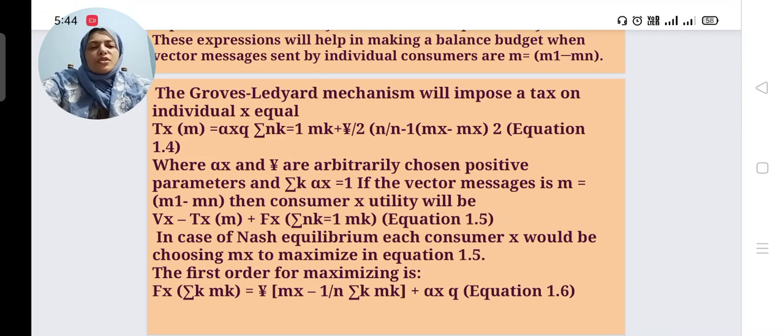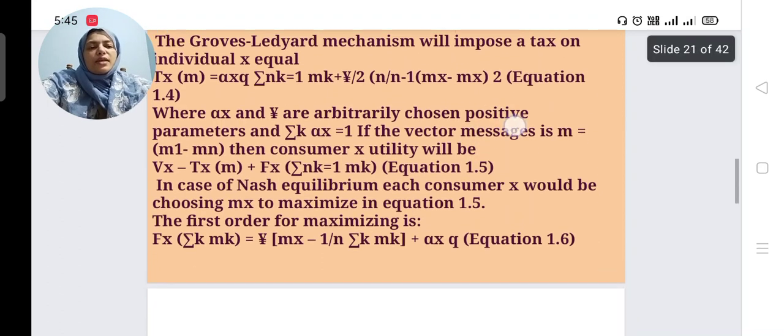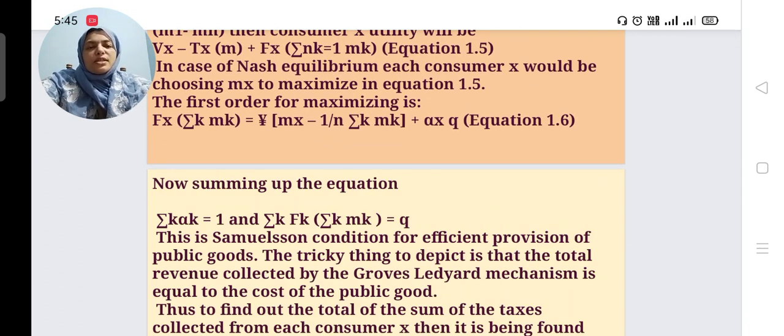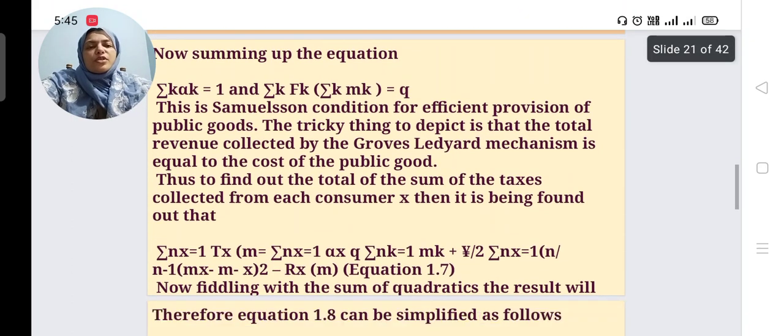Then the equation can be changed into the first order for maximizing: f'x(Σk mk) = γ × [mx - 1/n × Σk mk] + αx, considered as equation 1.6. Now summing up this equation we will get another equation: Σ αk = 1 and Σk f'k(Σk mk) = q.